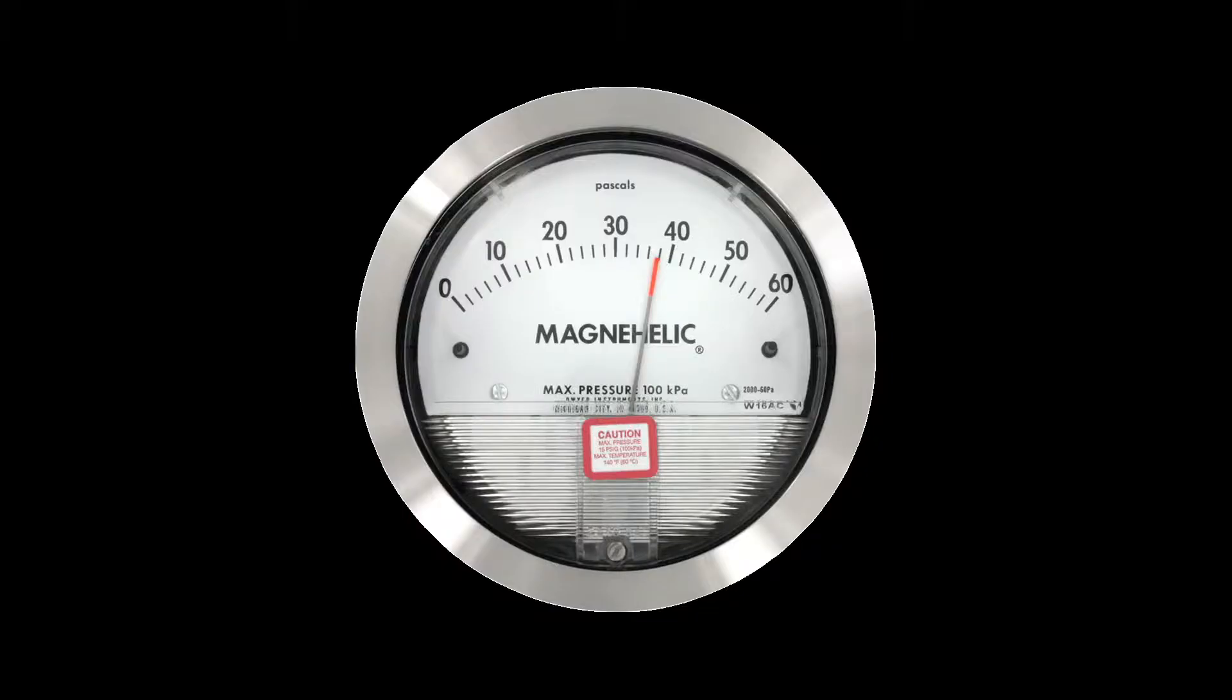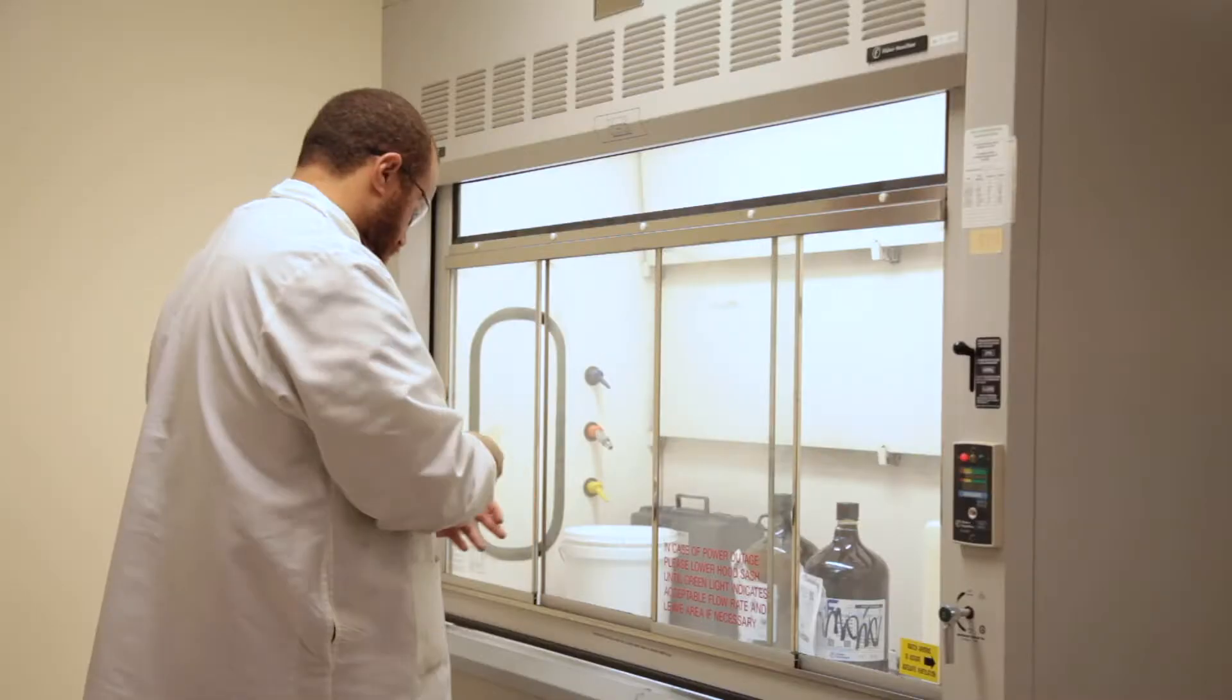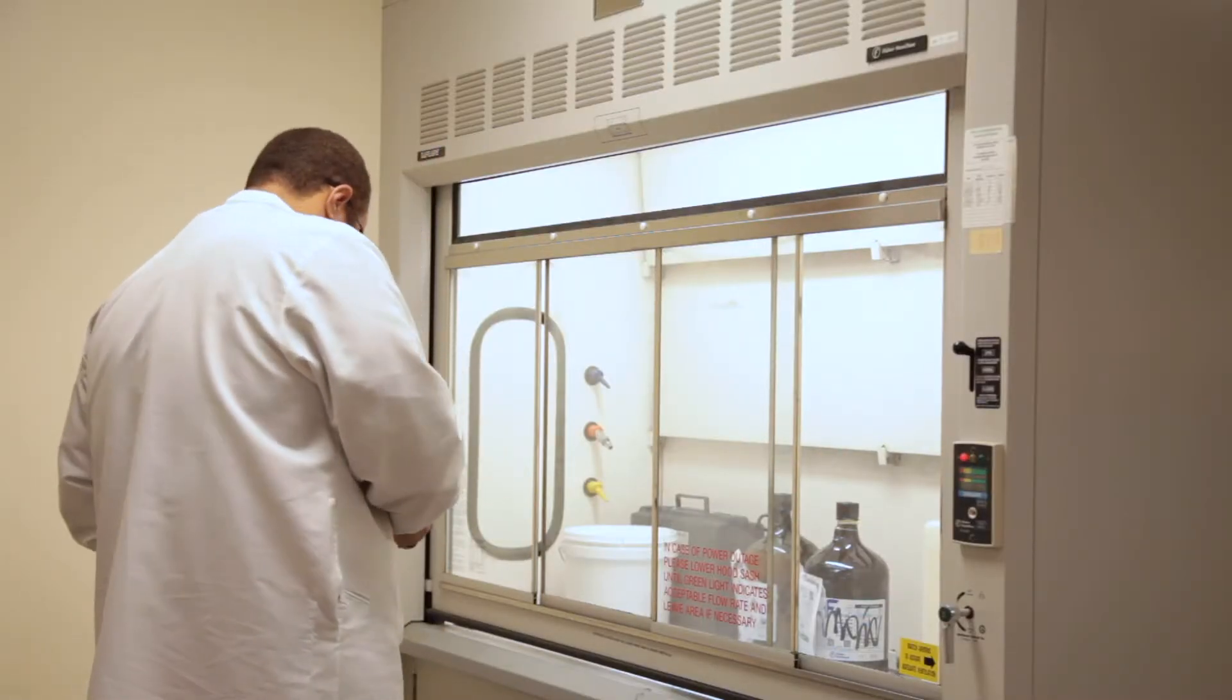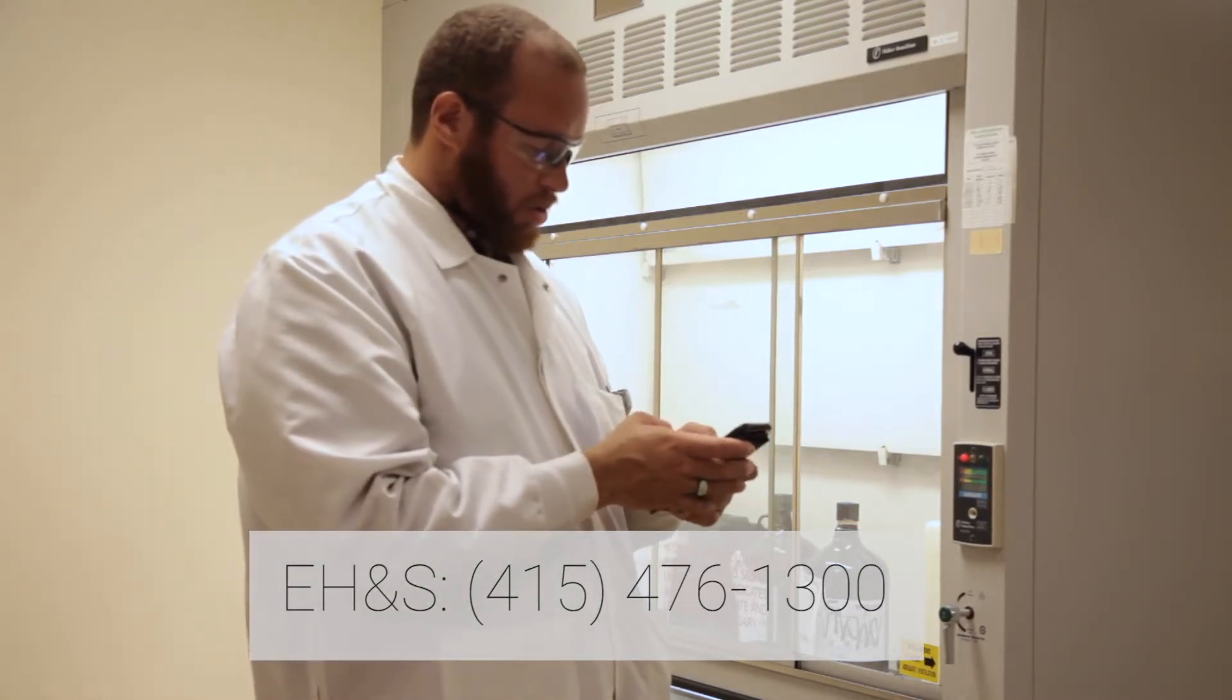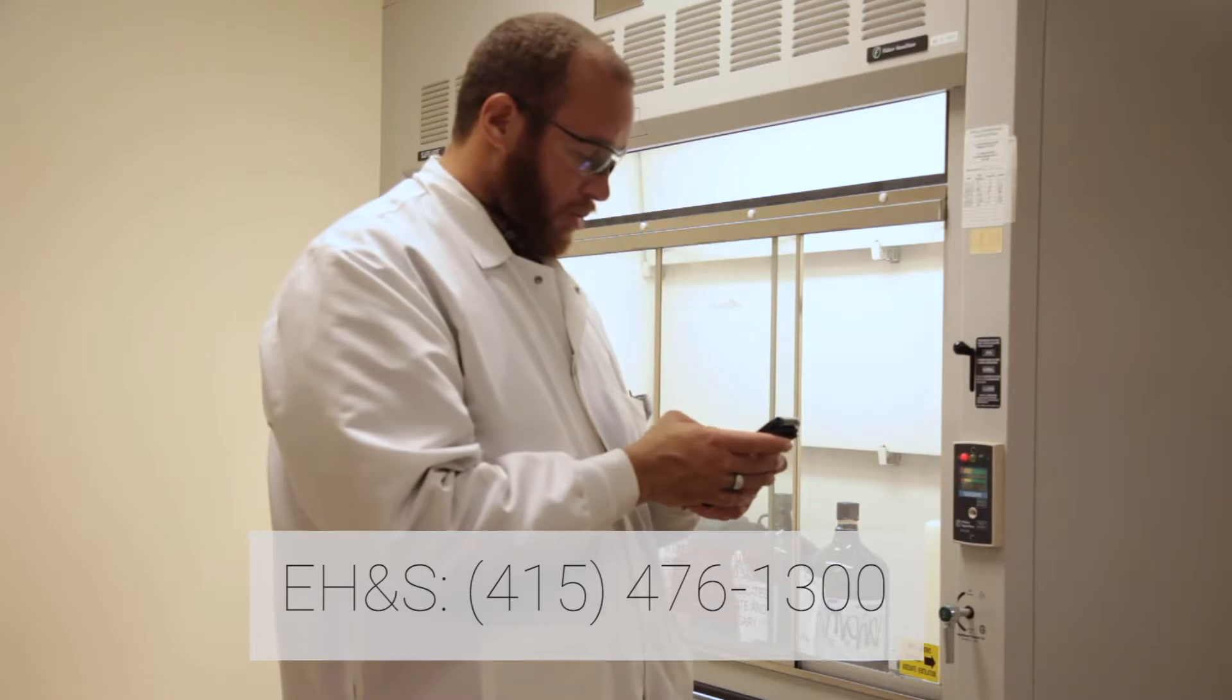If your hood has a magna helic gauge, the pressure reading at the time of the last certification will be noted on the certification sticker. If the current reading varies significantly, your fume hood may not be functioning properly. Contact EH&S at 415-476-1300 to have the hood inspected.